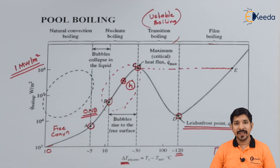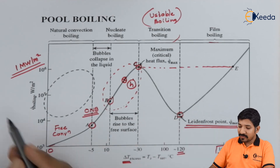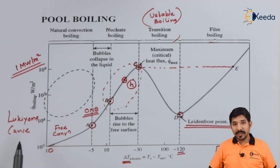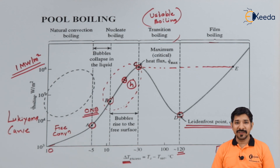In this topic we tried to understand what is meant by pool boiling, the various regions that are formed, and the significance of the various points on the graph. This graph is also called the Nukiyama curve — the heat flux versus ΔT graph for pool boiling is called the Nukiyama curve. Thank you for watching this video. Please stay tuned with Ikeda and subscribe to Ikeda.